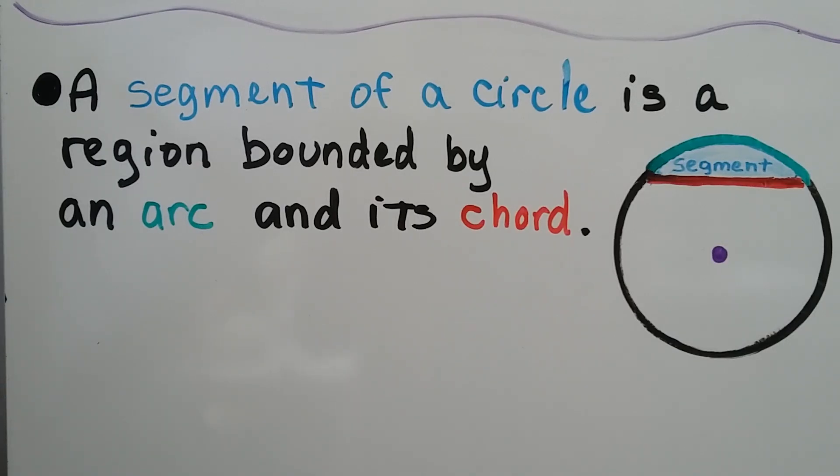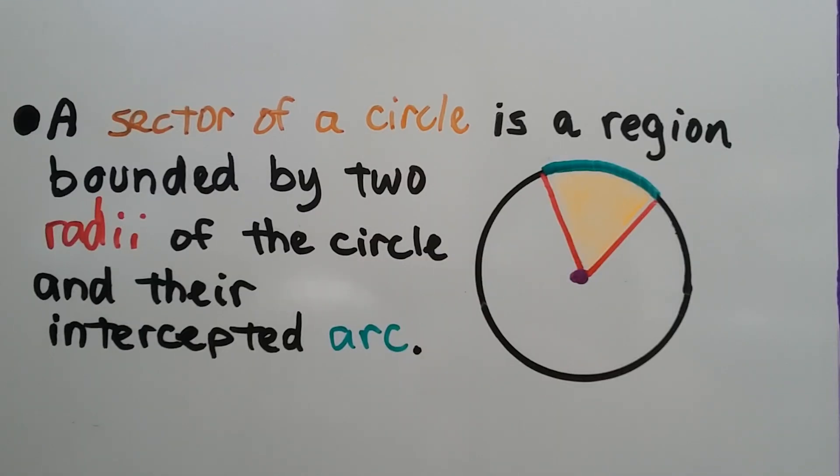A segment of a circle is a region bounded by an arc and its chord, so that light blue area is considered a segment of the circle. And as we discussed in the previous video, a sector of a circle is a region bounded by two radii of the circle and their intercepted arc.